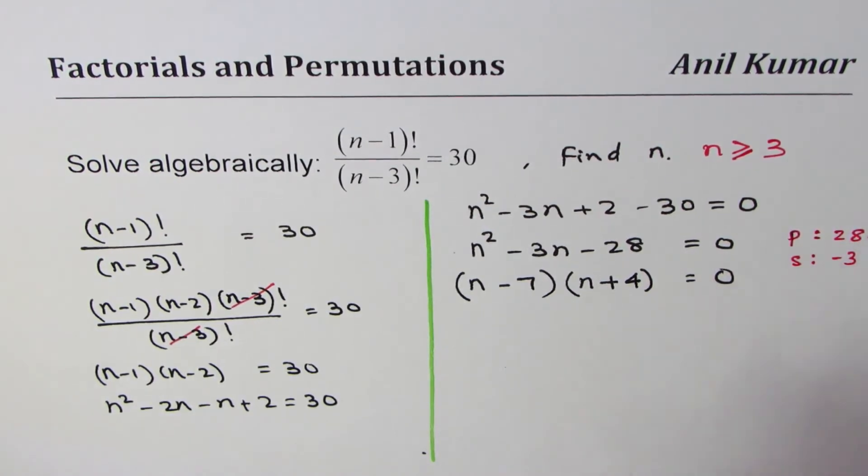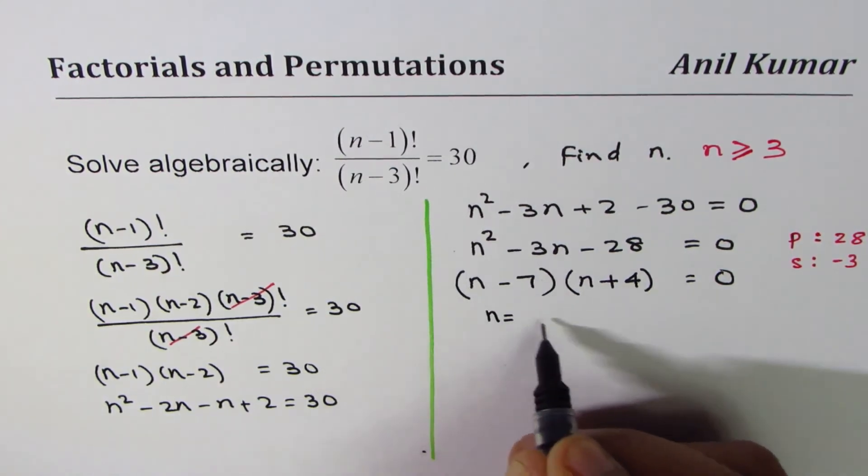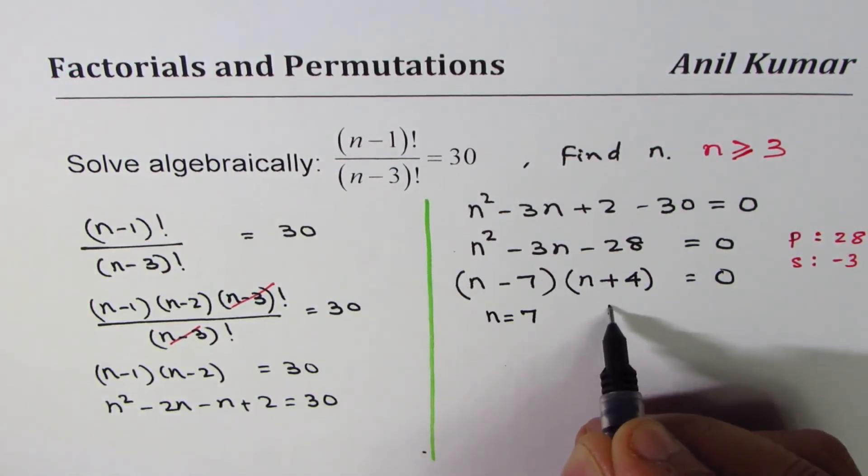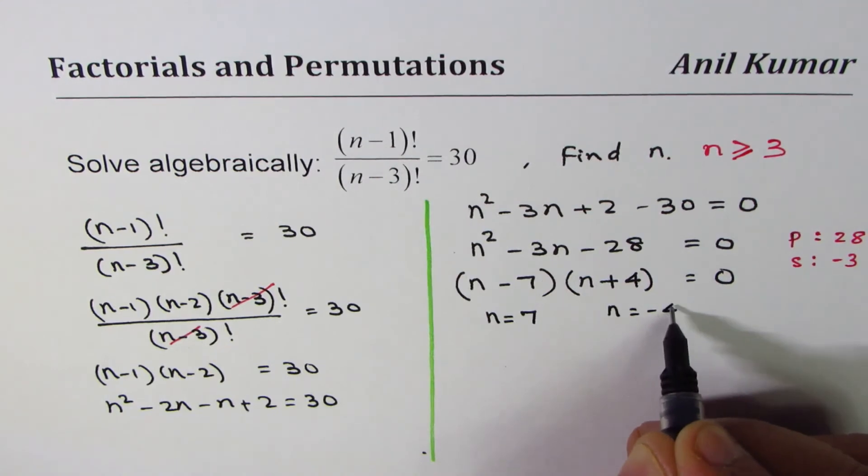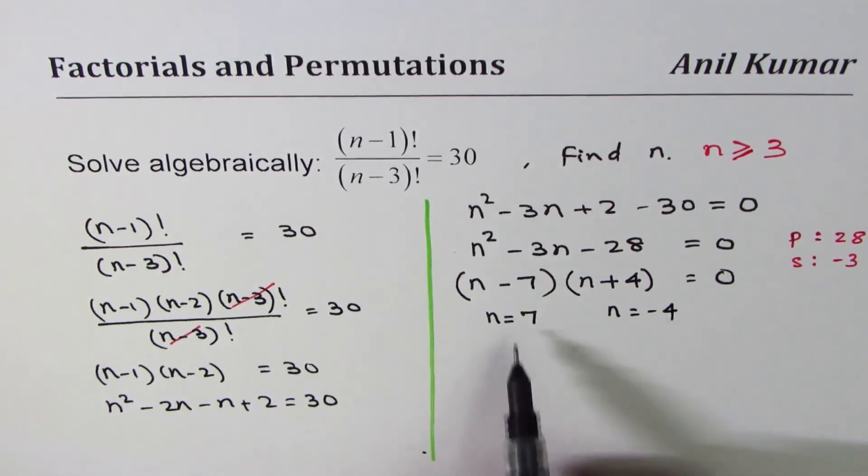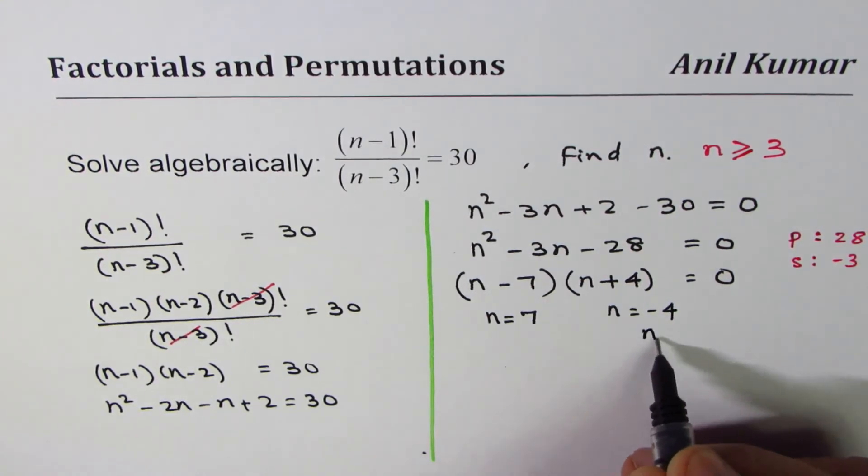Now that gives us two solutions: one is n equals 7, the other one is n equals minus 4. And as n should be greater than 3, n equals 7 is a valid answer. This is not valid.